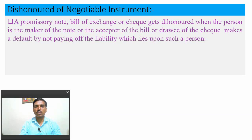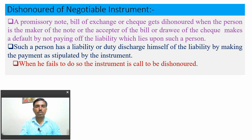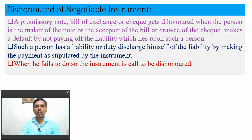Dishonor of a Negotiable Instrument means the Promissory Note, Bill of Exchange, or Cheque is dishonored when the maker, acceptor, or drawee makes a default by not paying off the liability which lies upon them. In the case of a cheque, when payment is not accepted by the bank and not given as per the instruction of the drawer, it is called dishonor. When such a person fails to discharge the liability attributed by the instrument, the instrument is called dishonored.